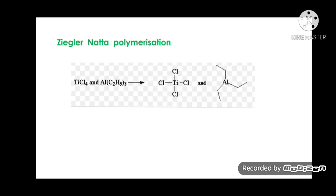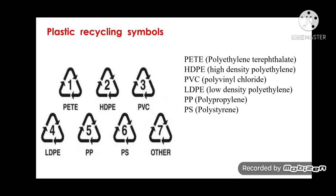Ziegler-Natta polymerization: the Ziegler-Natta catalyst is a combination of TiCl₄ (titanium tetrachloride) and Al(C₂H₅)₃ (triethylaluminum).